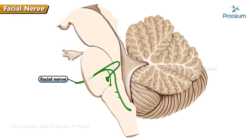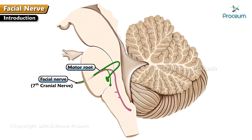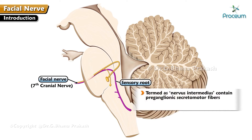Facial nerve, the seventh cranial nerve. Introduction: the facial nerve is a mixed nerve containing motor and sensory root. The sensory root is also termed as nervous intermedius, and contains preganglionic secretomotor fibers.